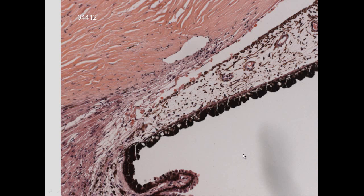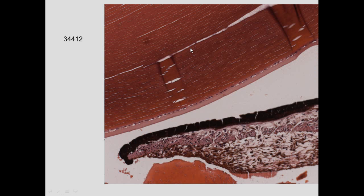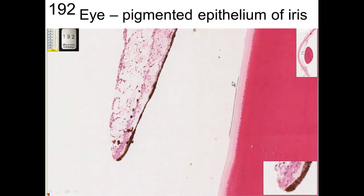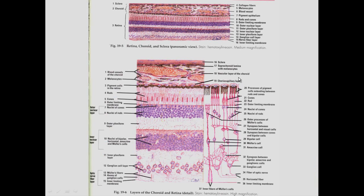The lens capsule is attached via zonules; on one side they are part of the lens, and on the other they attach to the ciliary processes. The myoepithelium serves as the dilator muscle of the iris. Fluid produced at the ciliary processes goes around the pupil and is absorbed near the trabecular meshwork. We can see the lens capsule and cuboidal epithelial cells, along with the iris and its various cell layers.